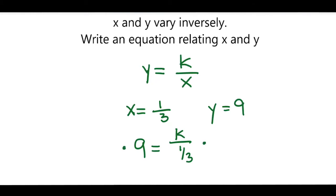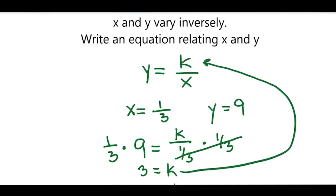I will multiply both sides of the equation by 1/3, and these 1/3s cancel. So now what is 1/3 of 9? Well, that's 3, so 3 equals k. I'll take that k and plug it into the inverse variation model. So I will get y equals 3 over x. And that's how you write an equation relating x and y.